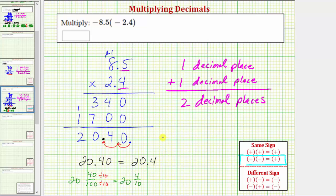And again, we already determined that a negative times a negative is positive. And therefore, negative 8.5 times negative 2.4 is positive 20.4. I hope you found this helpful.